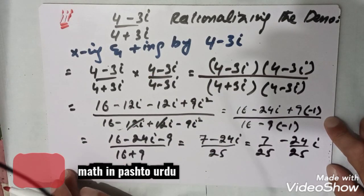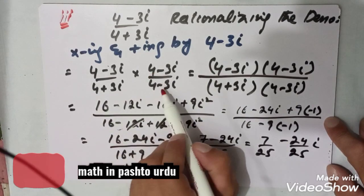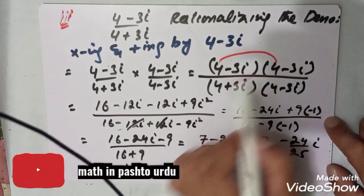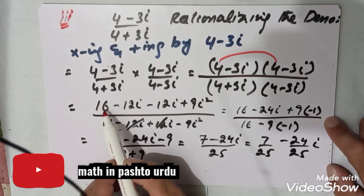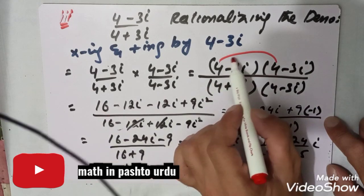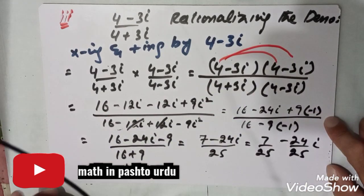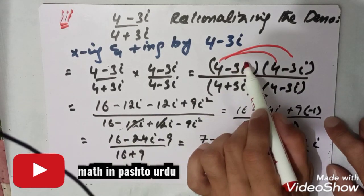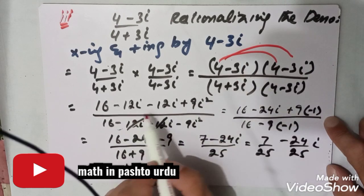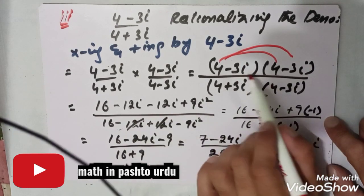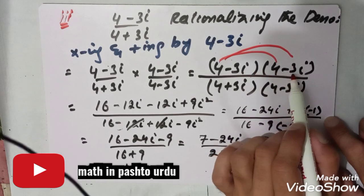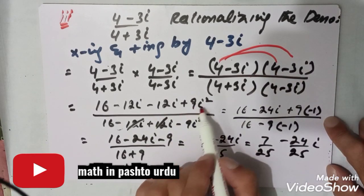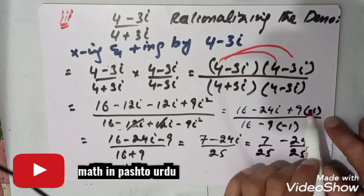In the numerator, (4 minus 3 iota) multiplied by (4 minus 3 iota): 4 times 4 gives 16, 4 times minus 3 iota gives minus 12 iota, minus 3 iota times 4 gives minus 12 iota, and minus 3 iota times minus 3 iota gives plus 9 iota squared. Since iota squared equals minus 1, this becomes plus 9 times minus 1, which is minus 9.